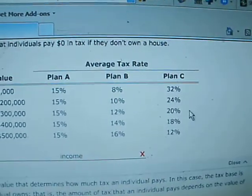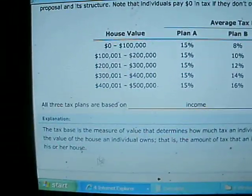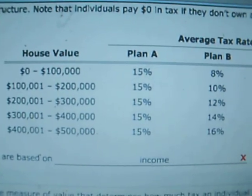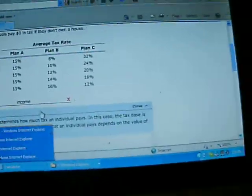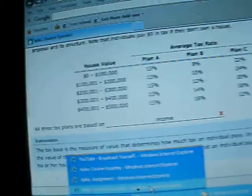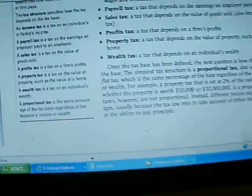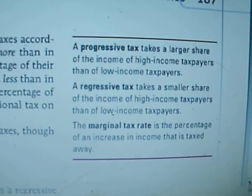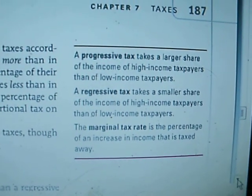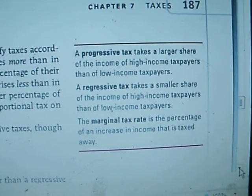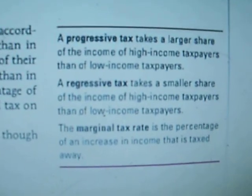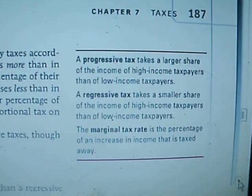And here in Plan C, it goes the other way with house value. But because Plan A does not go anywhere based on house value, are these really house value? Or, as the book says, income? The book says income. Progressive tax is based on a larger share based on the income of the taxpayer. So progressive tax is Plan B and regressive tax is Plan C. Again, they are both based on income. This is according to the textbook.